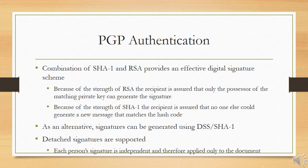PGP authentication is a combination of SHA-1 and RSA, which provides an effective digital signature scheme. Because of the strength of RSA, the recipient is assured that only the possessor of the matching private key can generate the signature. Because of the strength of SHA-1, the recipient is assured that no one else could generate a new message that matches the hash code.